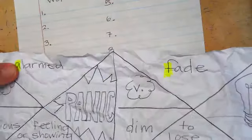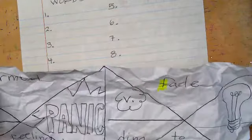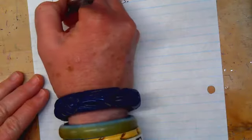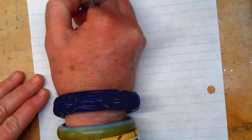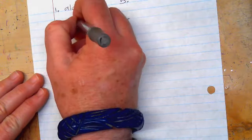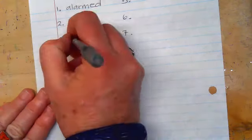I have alarmed and I have awe. The L comes before W in the alphabet, so my first word is going to be alarmed. My second word is going to be awe. My third word is going to be broadcast, because B comes after A in the alphabet.